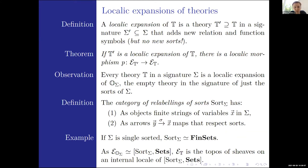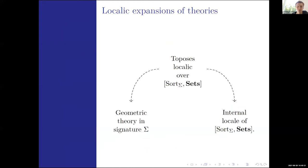Whenever we have something that's localic over another topos we get an internal locale, and here we get a quite nice description for the internal locale corresponding to a classifying topos of a theory T. Since every Grothendieck topos is a classifying topos of some theory, we can perform this construction for every topos. In the restricted context, the unifying notion is toposes being localic over this presheaf topos, corresponding on one hand to the geometric notion of internal locales, and on the other hand to geometric theories in a signature sigma.